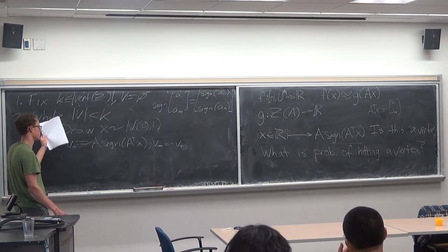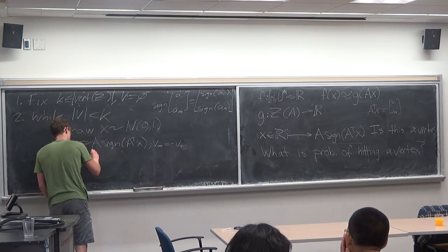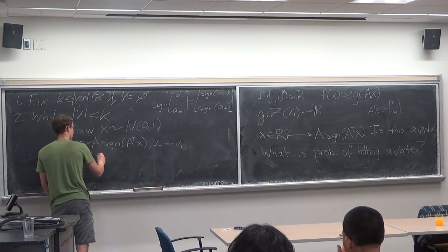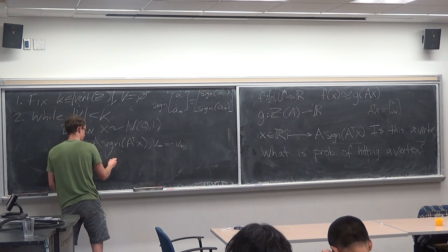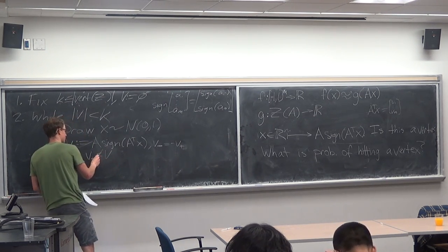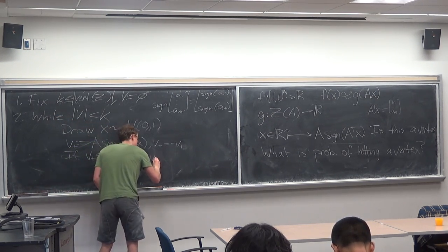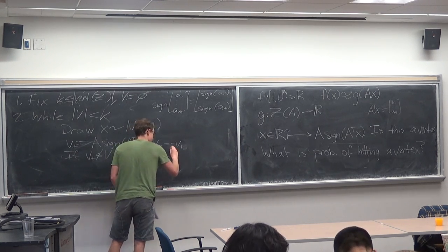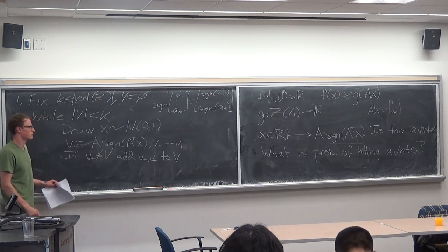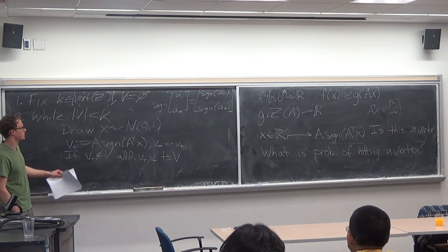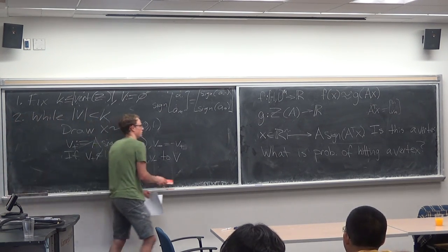Then, if v_+ is already in v, continue the while loop. If it's not in there, add v_+ and v_− to your collection of vertices. Essentially what we want to do is analyze this and see if this set v at the end is a good approximation for our zonotope.